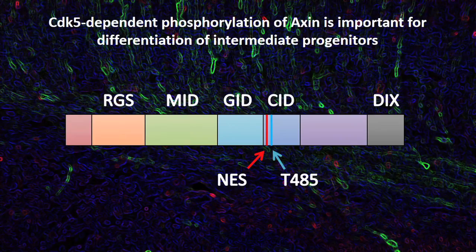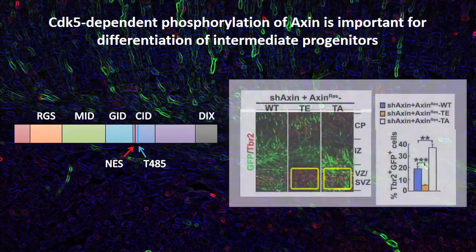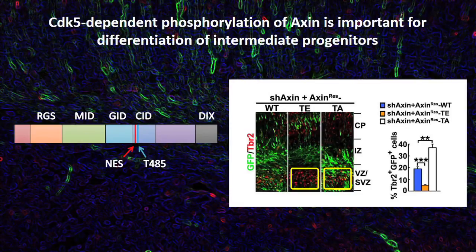We further investigated the molecular signal that controls subcellular axin protein trafficking. Axin is phosphorylated by kinase CDK5, and that phosphorylation was induced in neuroprogenitors upon neurodifferentiation. Importantly, phosphorylation of axin mediated the nuclear localization of the protein. Expression of the phosphorylation mimetic or deficient axin mutants enhanced or inhibited neurodifferentiation respectively.